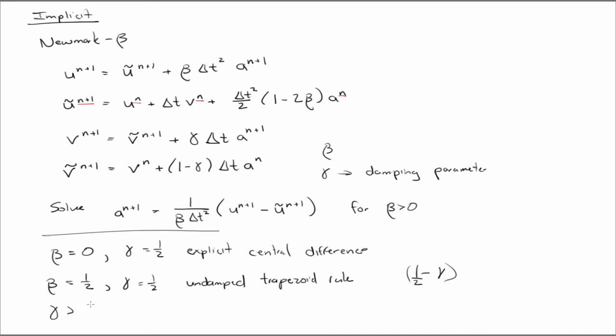Yeah, so if you choose gamma greater than one half, then you get some damp response that is proportional to gamma minus one half. I wrote that backwards. And these families, what's nice about these families is that they are unconditionally stable. Meaning you can take arbitrary large time steps for beta greater than gamma over two greater than a quarter.